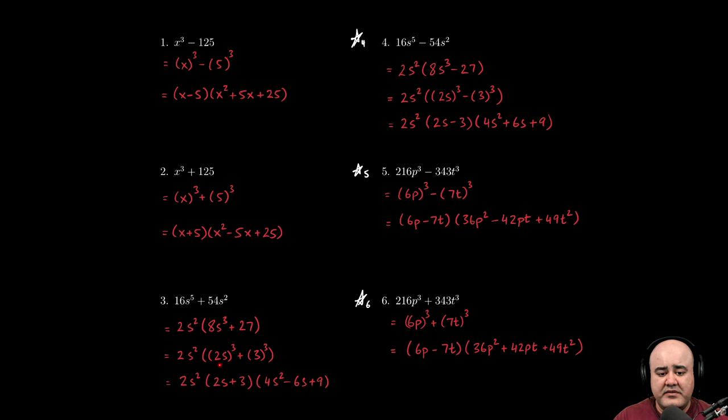Minus, now remember this is the opposite of the sign in the problem, so this would be a minus here. A times b, so 2s times 3 would give us 6s, and then b squared or the second term squared, 3 squared gives us 9.